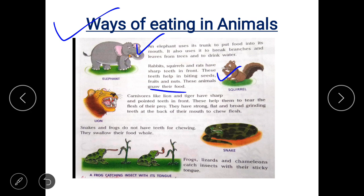Carnivores like lion and tiger have sharp pointed teeth in front to tear the flesh of their prey. They also have flat and broad grinding teeth at the back of their mouth to chew the flesh.